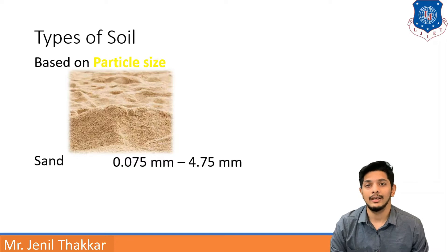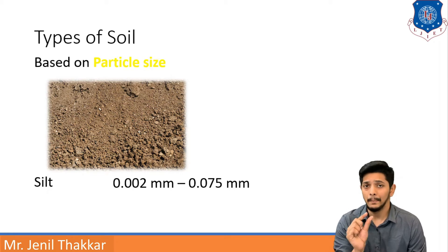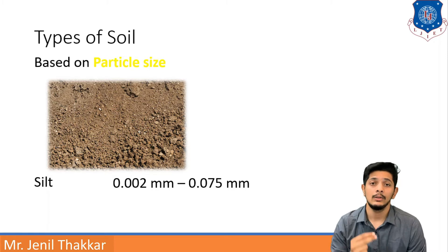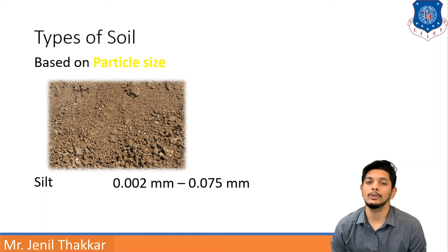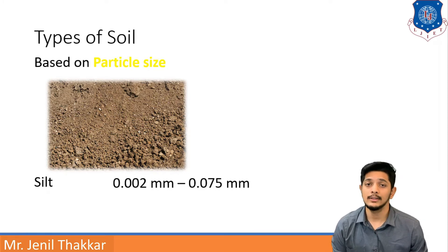Silt is a particle size between sand and clay. If the particle size is between 0.02 mm and 0.075 mm, the soil type is known as silt. You can see a picture of silt on the screen.